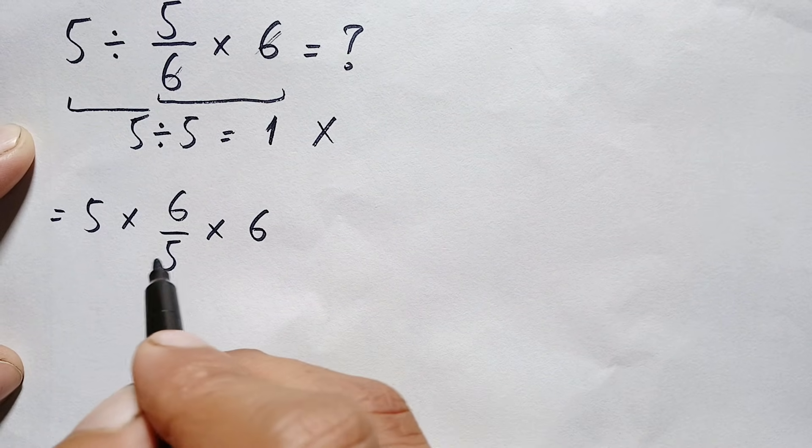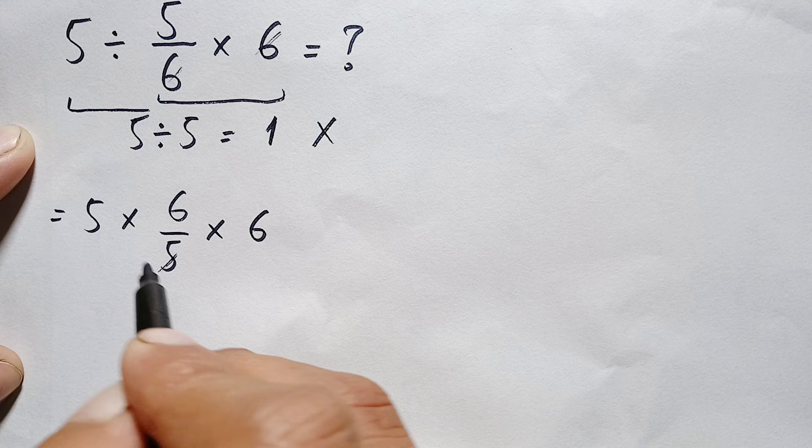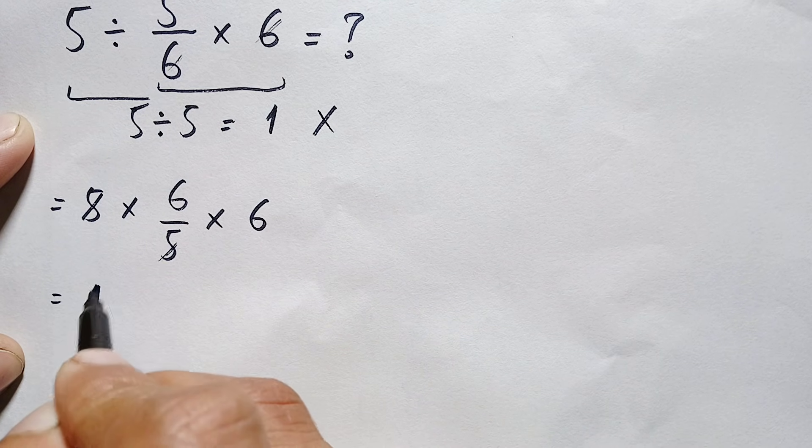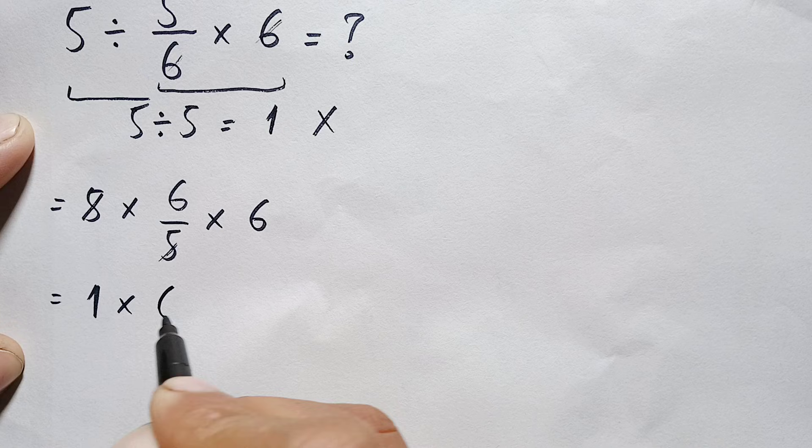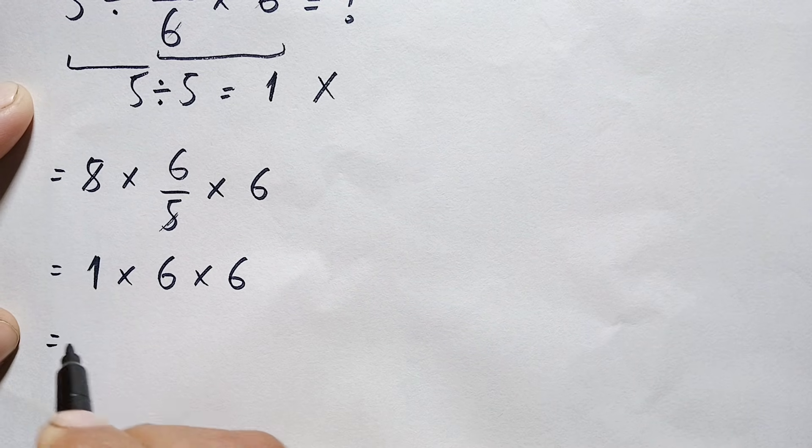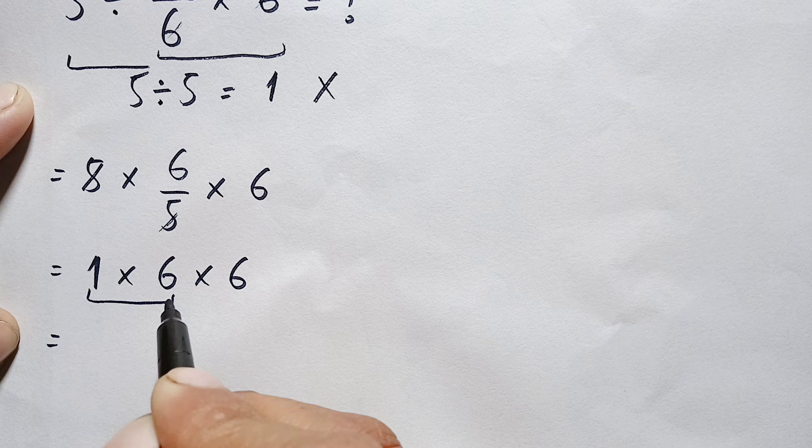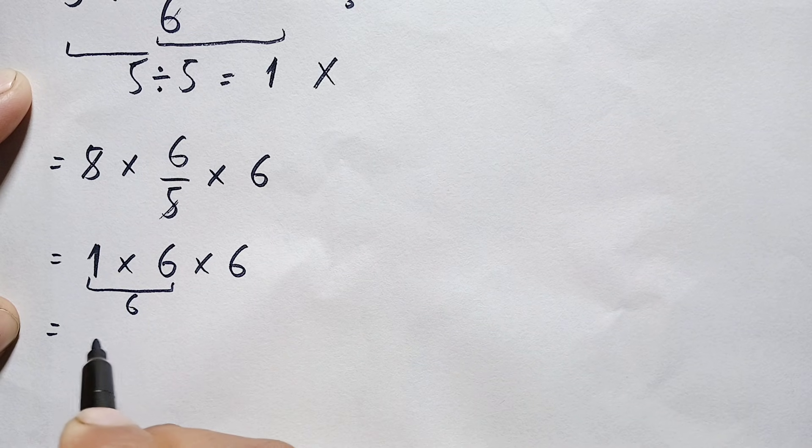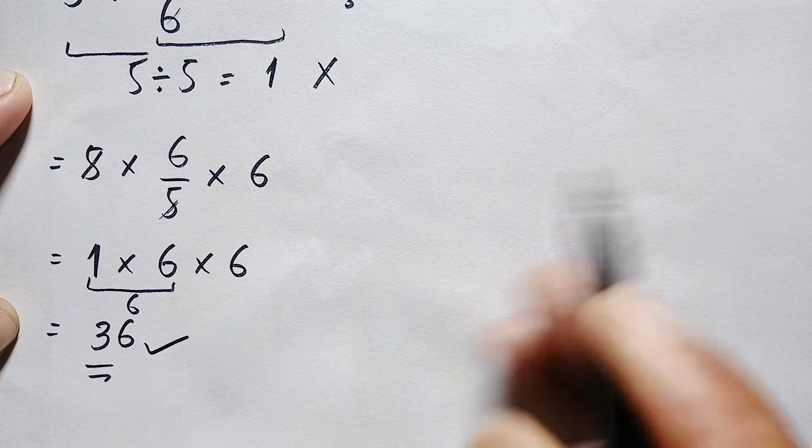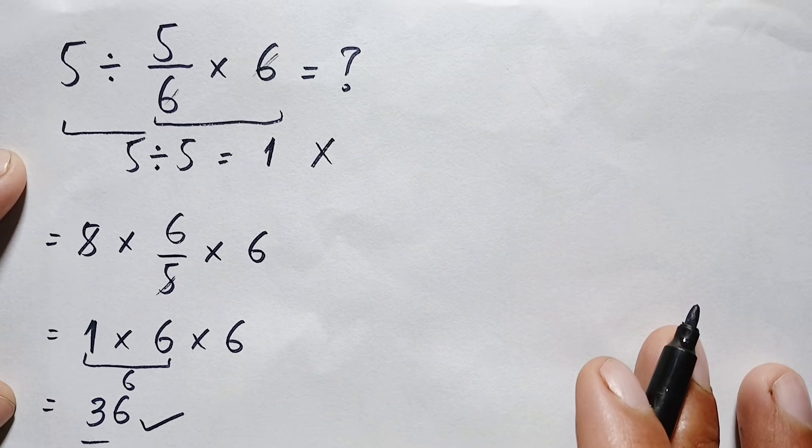Let's try this multiplication. We can cancel 5 with 5, which gives us 1. Finally, this becomes 1 times 6 times 6. Let's multiply: 1 times 6 is simply 6, and 6 times 6 is 36. So we get the final answer, which is 36, and this is our correct answer.